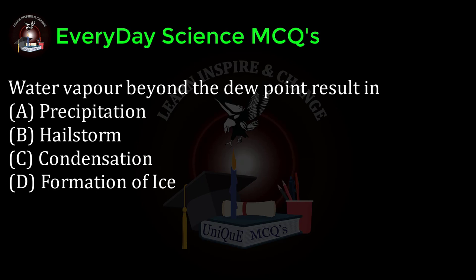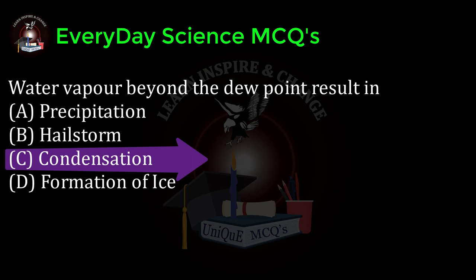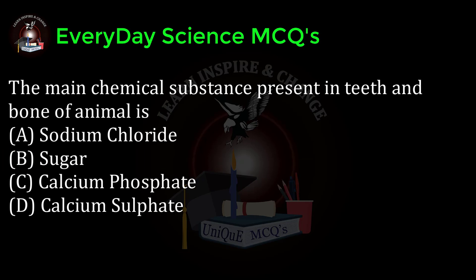Water vapor beyond the dew point results in: a) precipitation, b) hail storm, c) condensation, d) formation of ice. Correct answer: c.